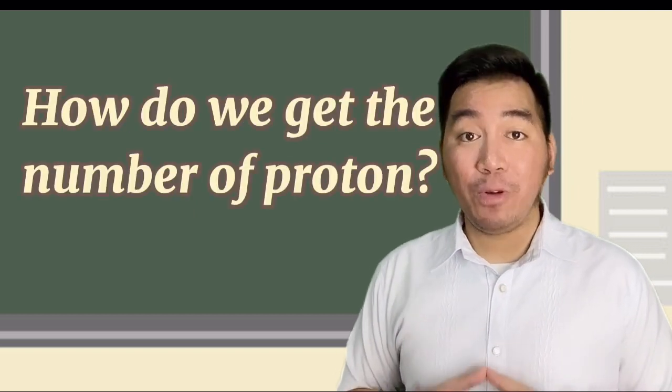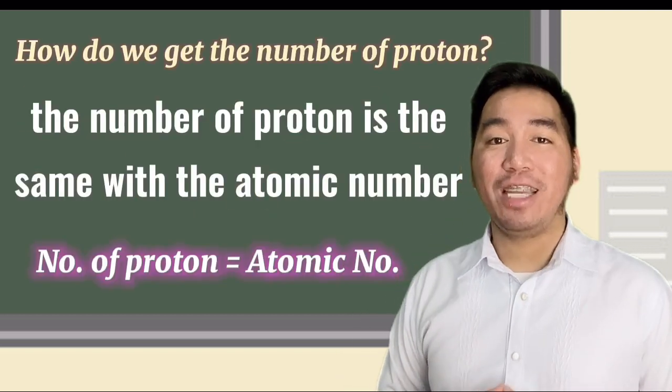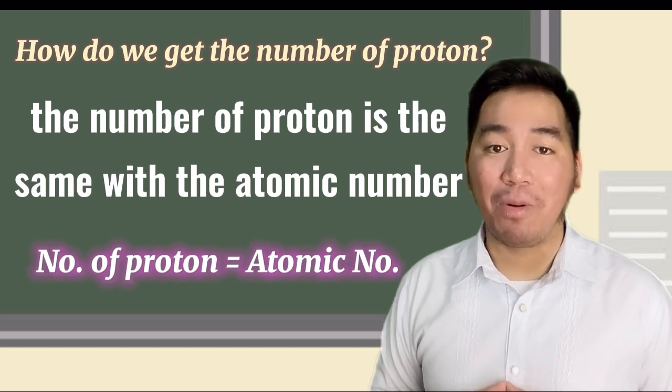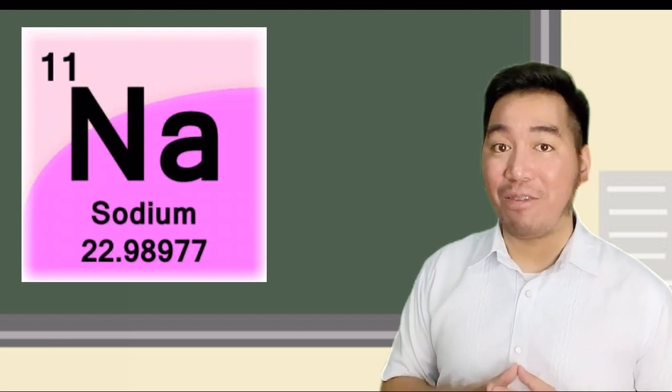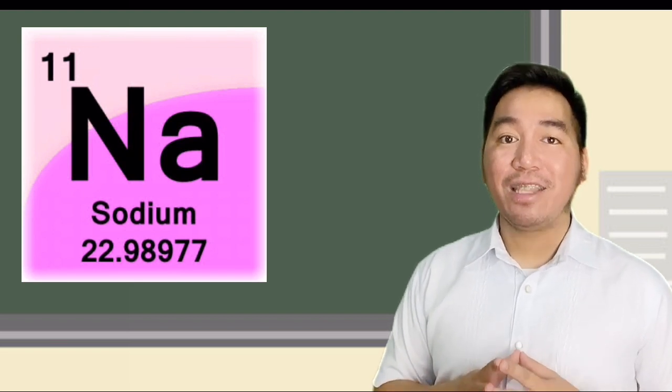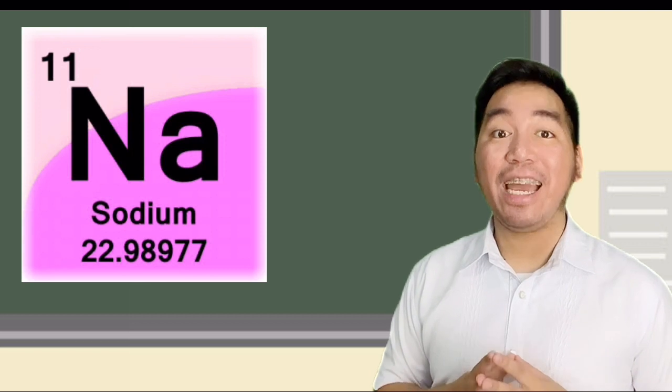So, how do we get the number of protons? The number of protons is the same with the atomic number. For example, the element sodium has the atomic number of 11. Therefore, the number of protons is 11.